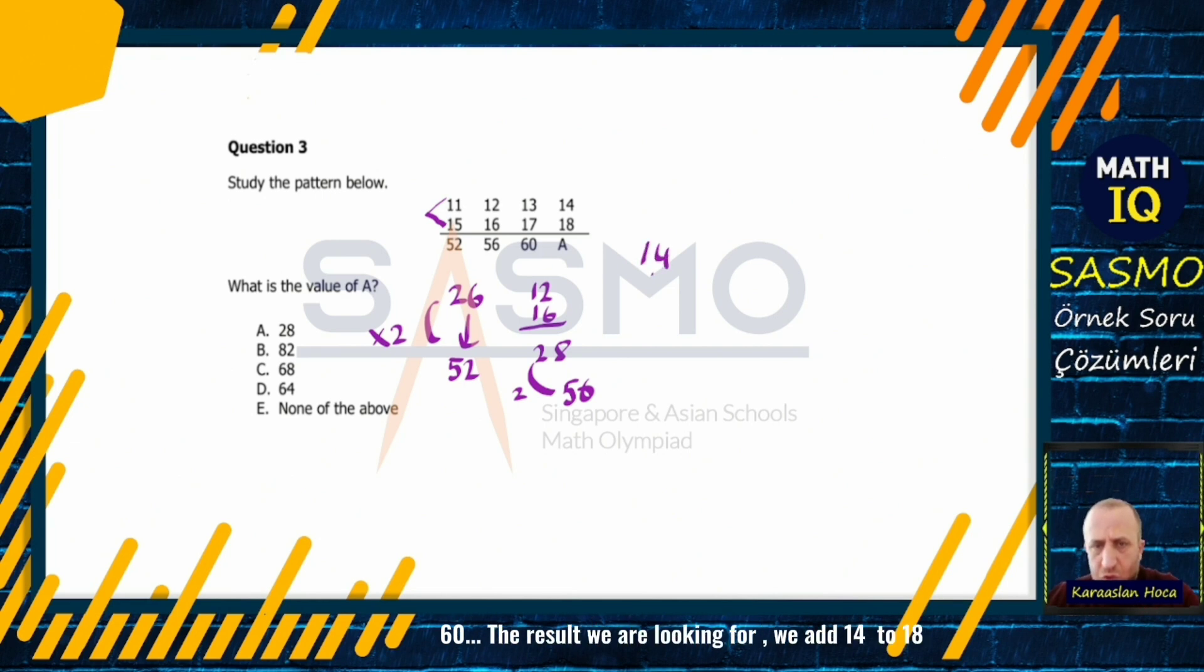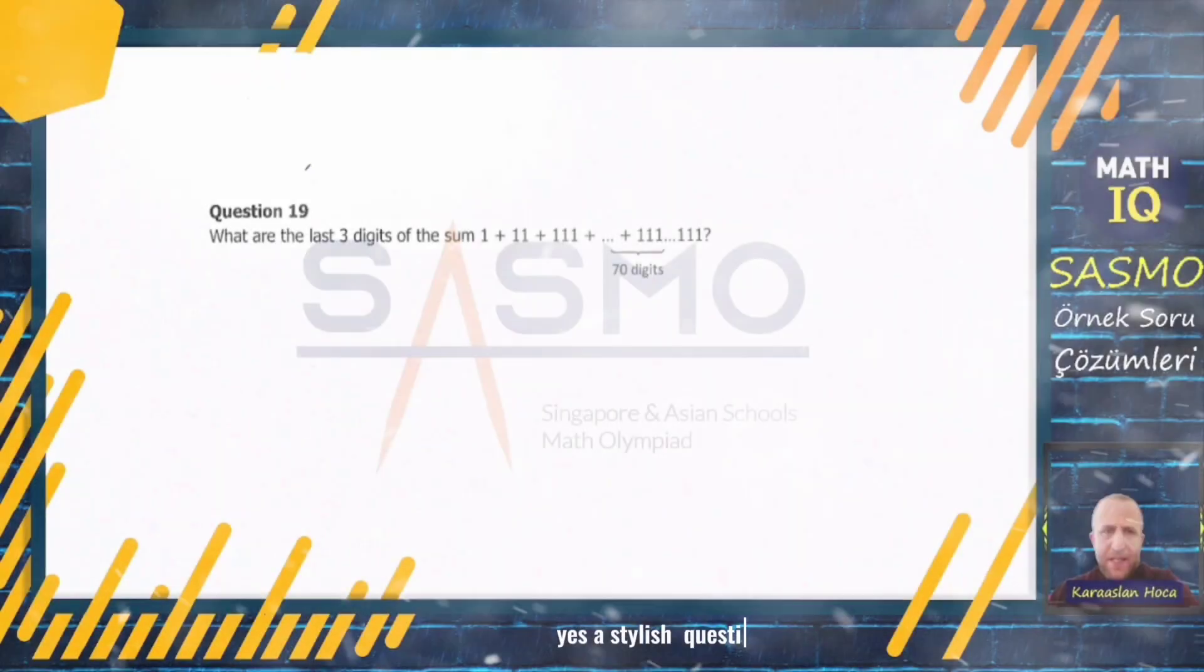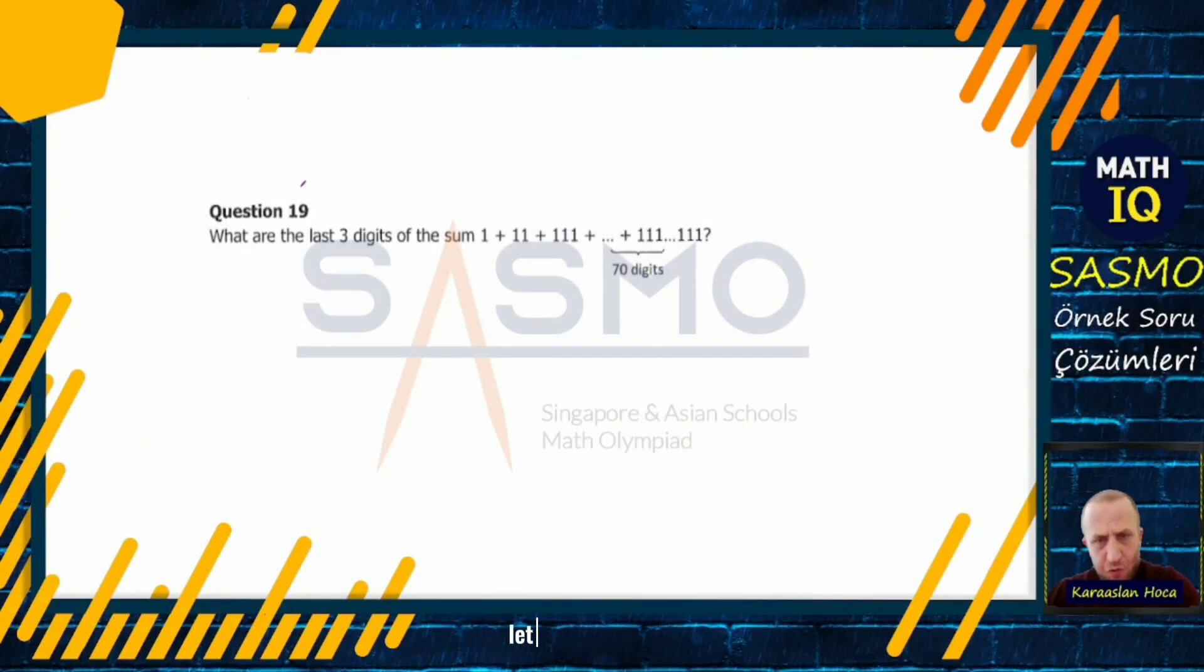The result we are looking for: we have 14 plus 18. As 32 dotted is increasing 2 times, so the result is 64. Yes, a stylish question now. Let's examine this very well carefully. The last 3 digits of this total are requested from us.